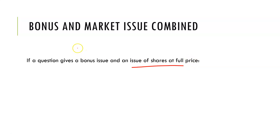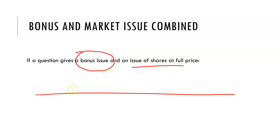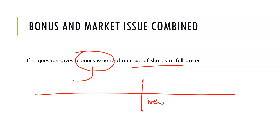As we know, with the bonus issue, we always go to the beginning of the year. A bonus issue will only be given to people who actually exist at the time, which means that if the market issue happens afterwards, the market people will only receive the new shares — they don't get any bonus.